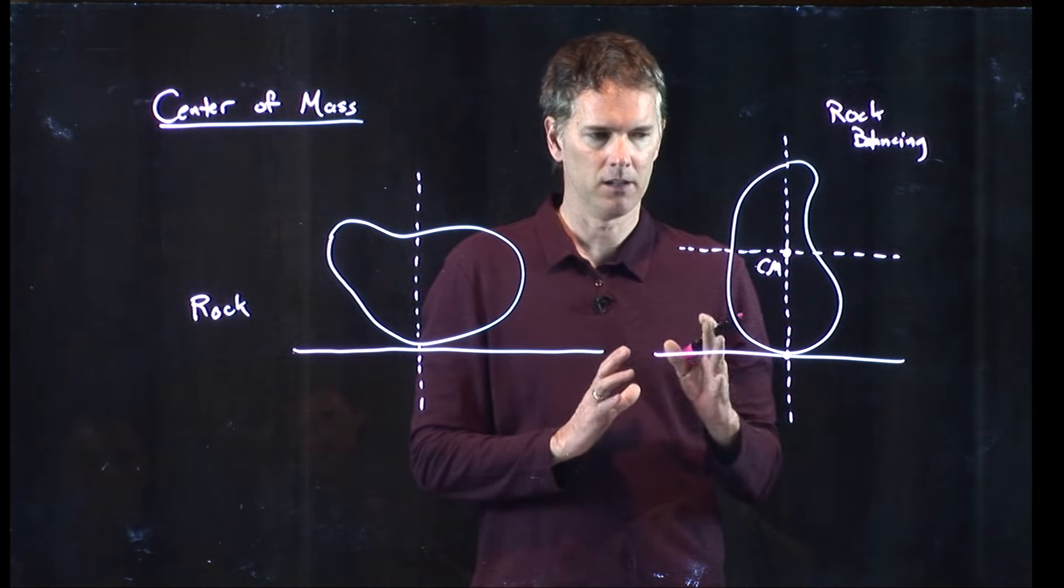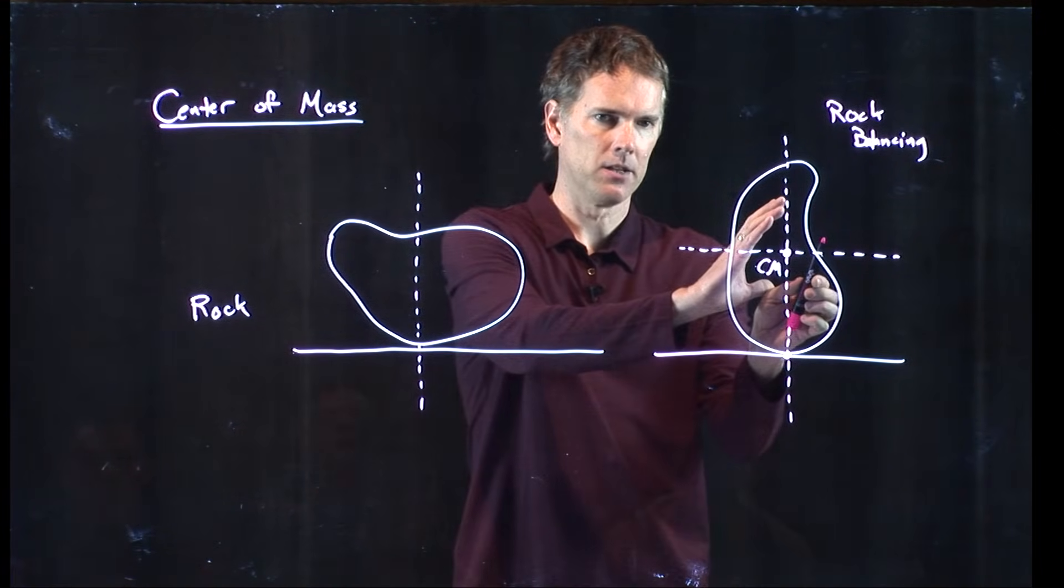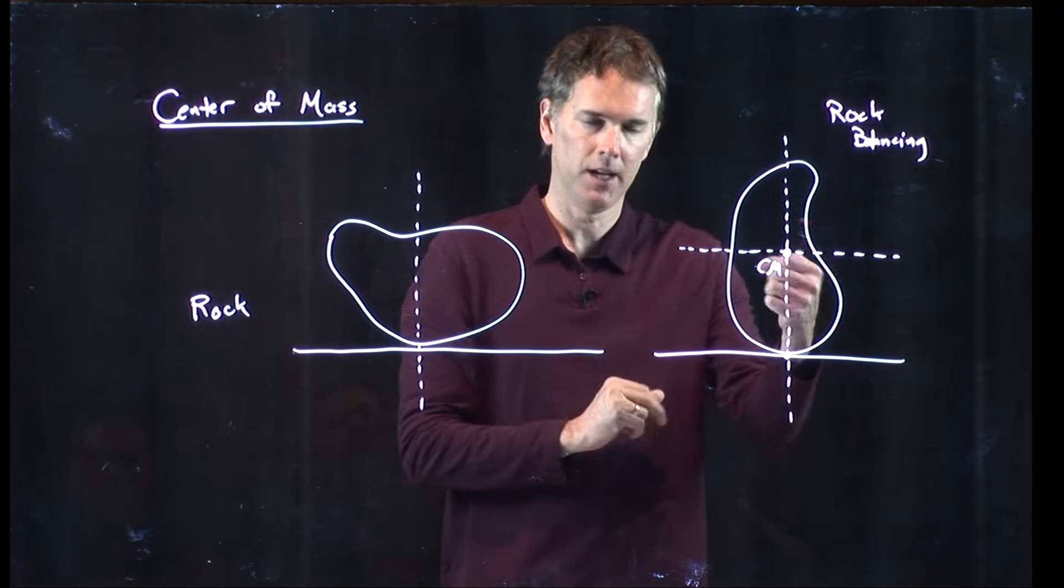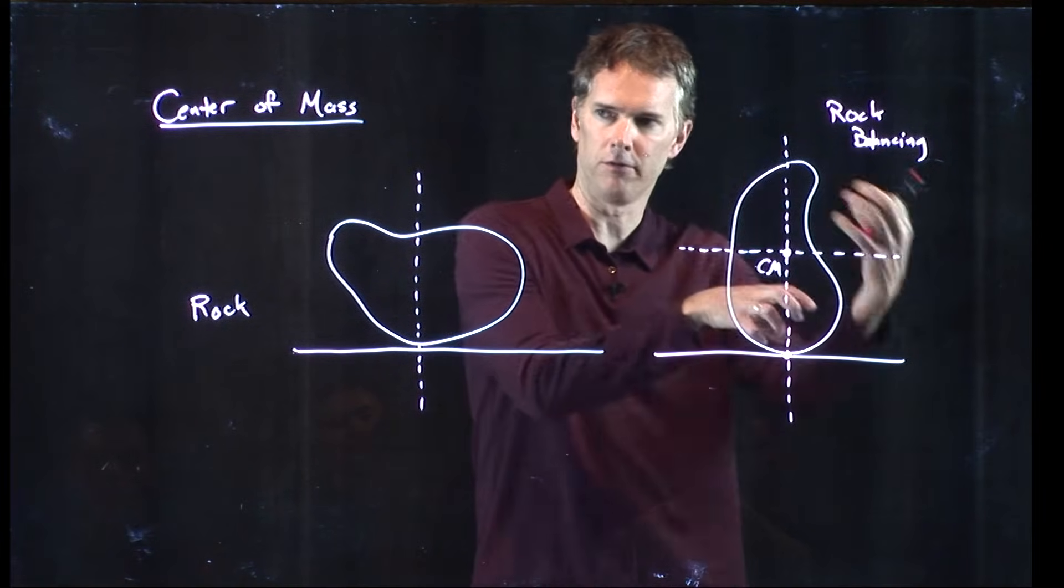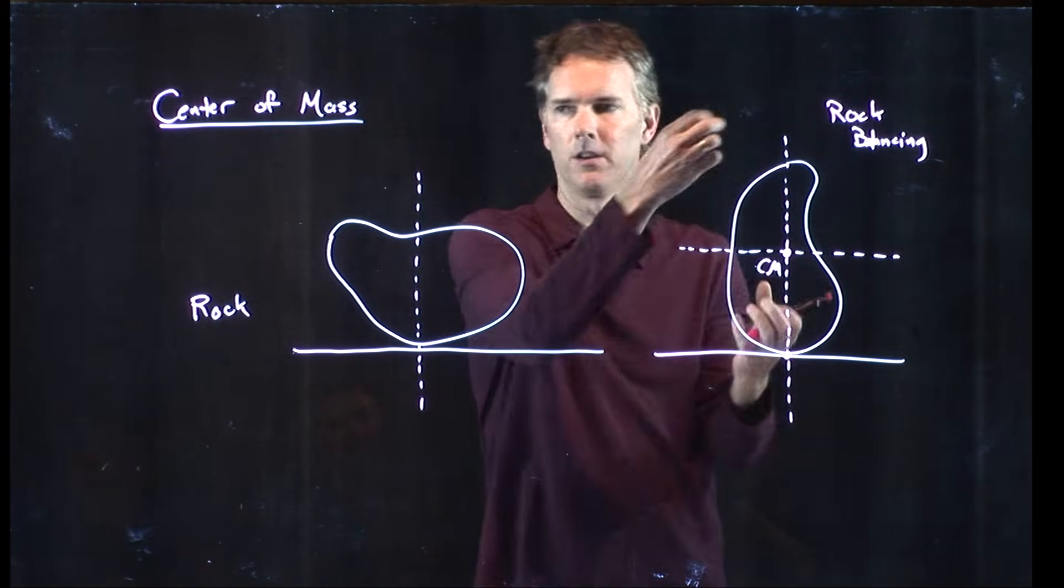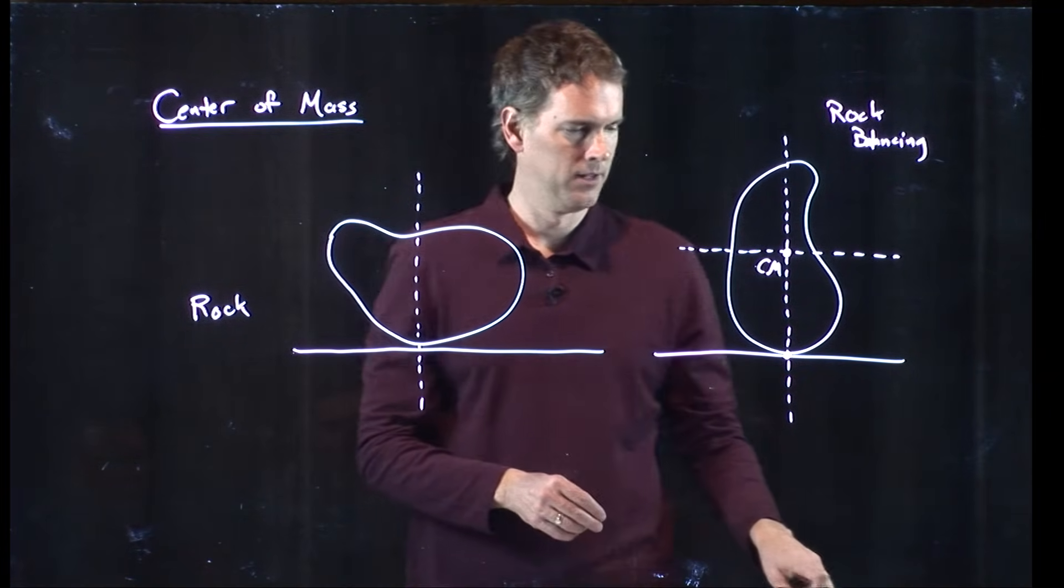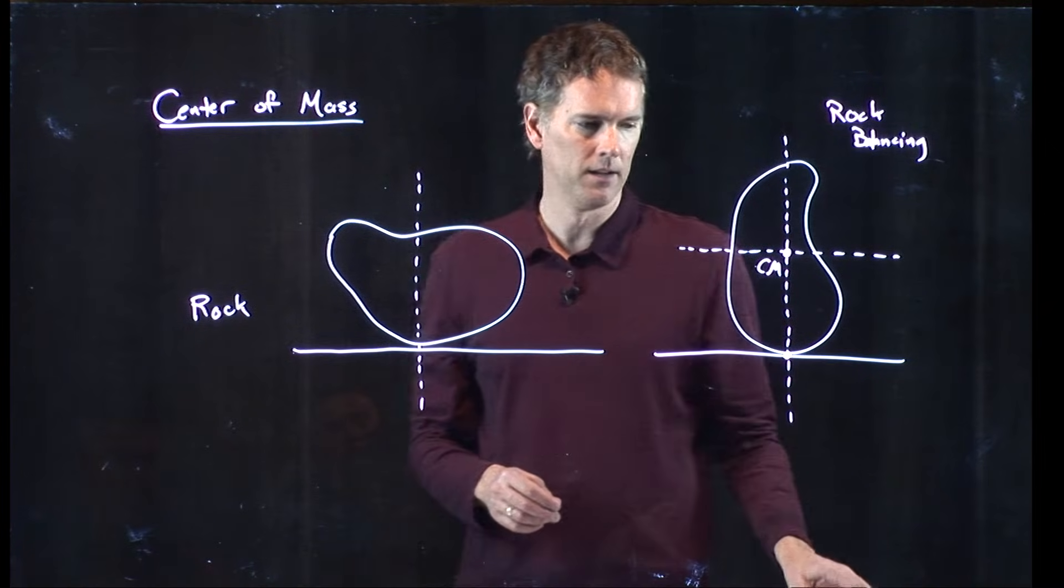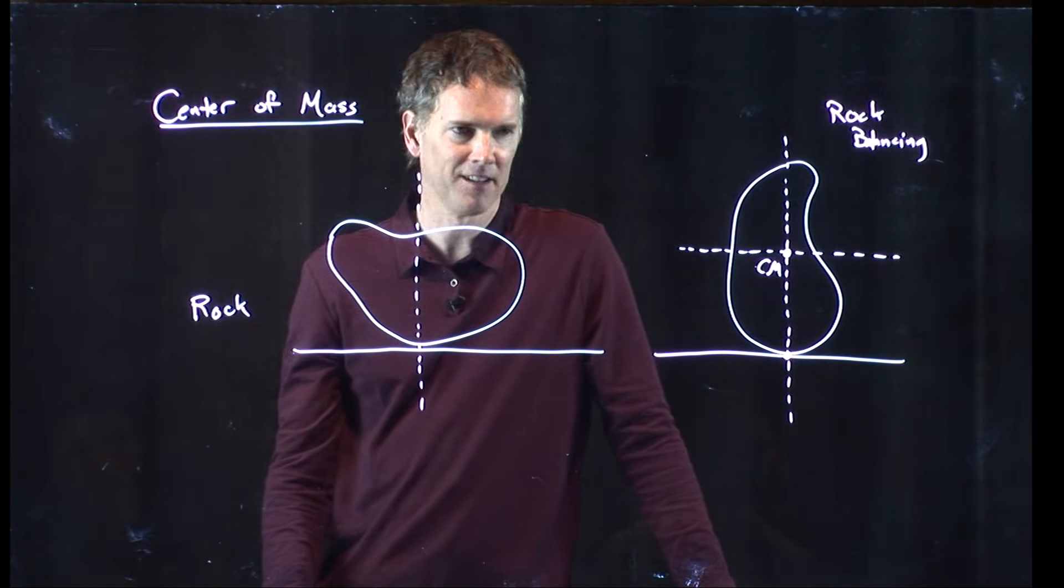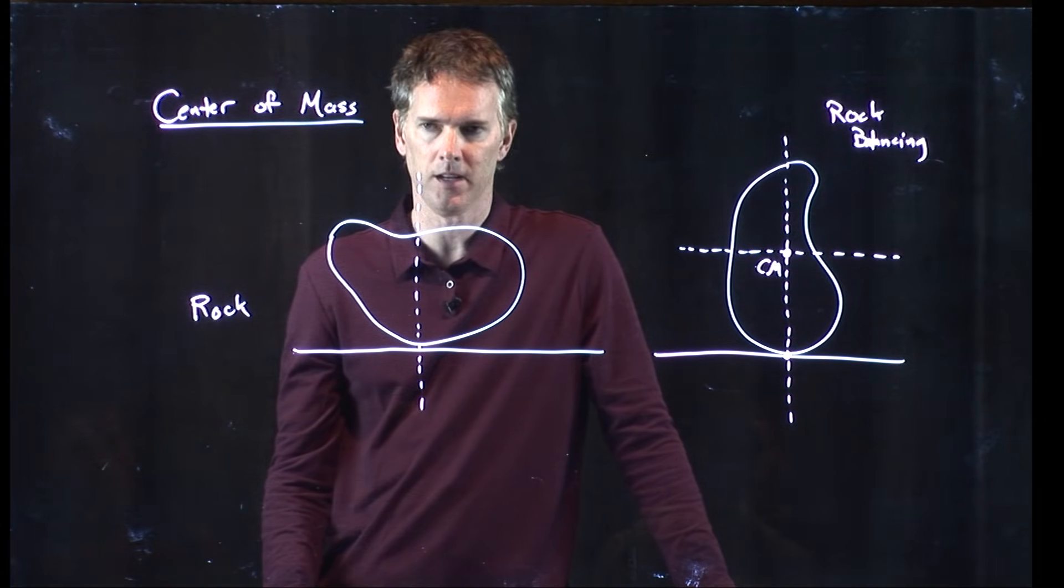And now you kind of can see what's going to happen, right? If the rock tilts slightly to the right, gravity acting on that center of mass is going to torque the object and cause it to fall to the right. If it's slightly to the left, then it's going to torque it and cause it to fall to the left. Yeah. So this is a great exercise of art and physics and balancing. It's really very tricky to do but pretty remarkable when you see it in action.